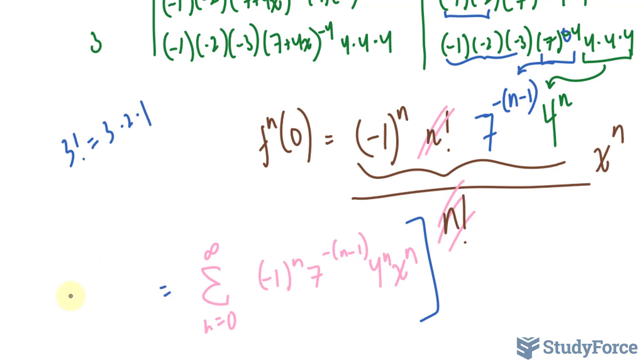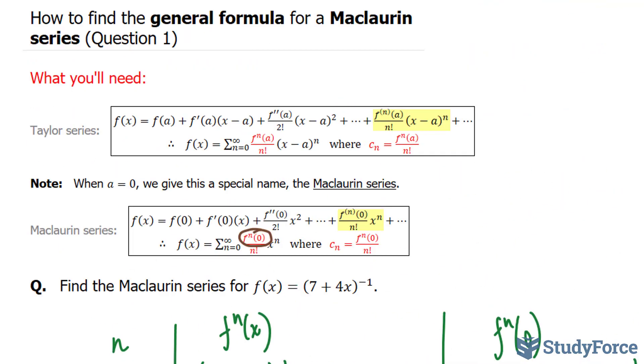This represents the general formula for our function. And there you have it. That is how to find the general formula for a Maclaurin series.